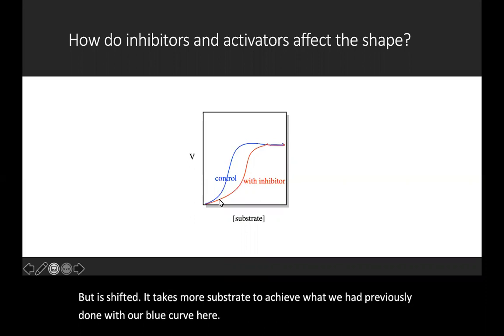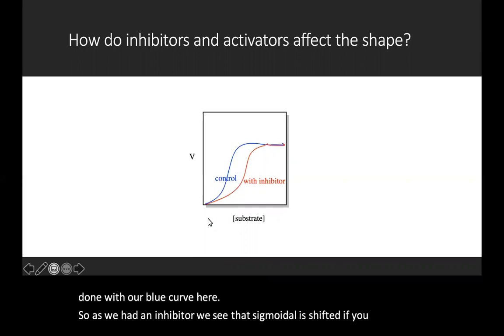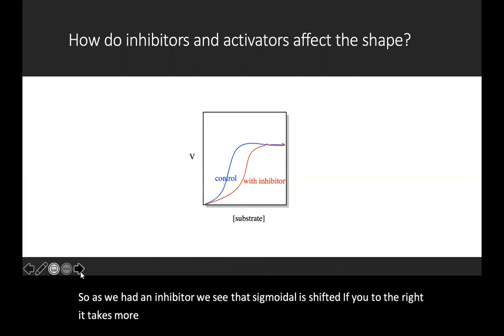So as we add an inhibitor, we see that that sigmoidal is shifted, if you will, to the right. It takes more substrate to get what we had seen before.